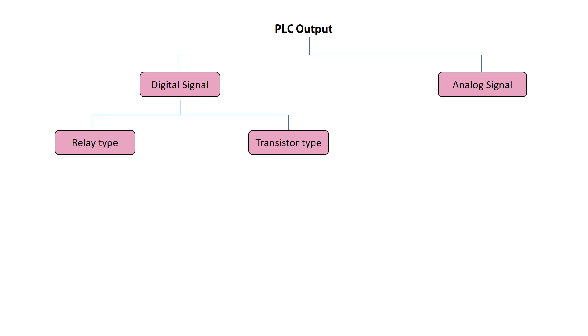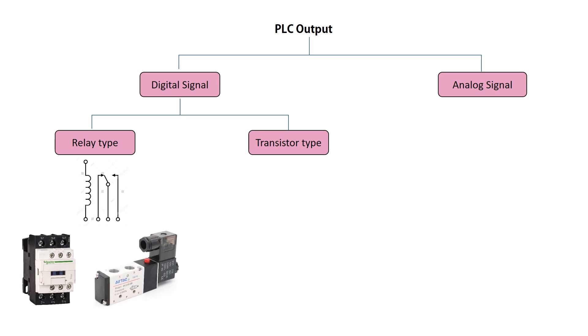PLC relay type outputs work similarly to normal relays, with the key difference being that the coil is energized by the PLC unit or program. Therefore, PLC relay type signals can switch both AC and DC loads, such as motor starters and pneumatic solenoid valves. These types of output devices receive digital signals.